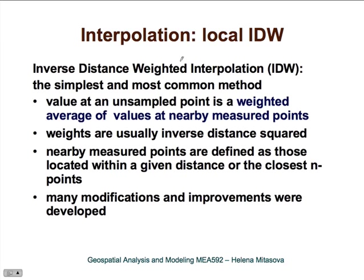The most common interpolation method implemented in all GIS and surface modeling systems is inverse distance weighted (IDW) interpolation. It is the simplest method to implement: the value at an unsampled point is a weighted average of values at nearby measured points. All you need to do is find the nearby points and compute a weighted average. The weights are usually inverse distance squared. Nearby points can be defined as those within a given distance, or as the closest N points — for example, the closest 12 or 24 points — and you compute your grid value as a weighted average of these.